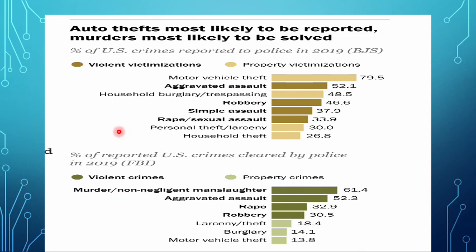A slide shows two key pieces of information. First, the percentage of crimes reported to police — based on the National Crime Victimization Survey — shows motor vehicle theft has the highest reporting rate, followed by aggravated assault, burglary, simple assault, rape/sexual assault, and personal and household theft. Reporting ranges from nearly 80% for auto theft down to about 26% for household theft. We'll discuss why certain crimes are less likely to be reported.